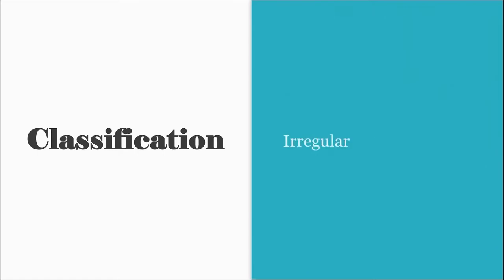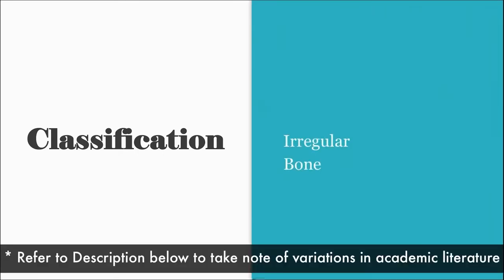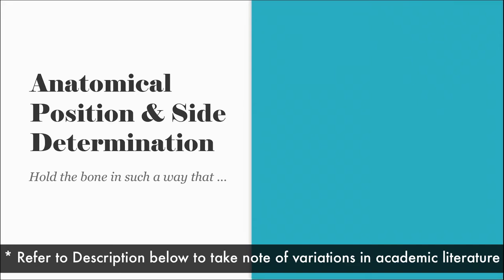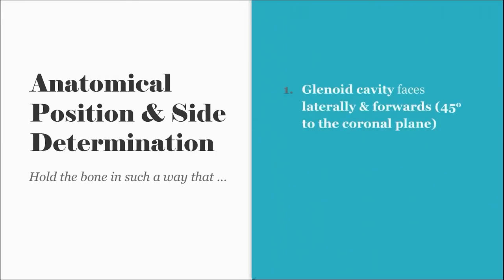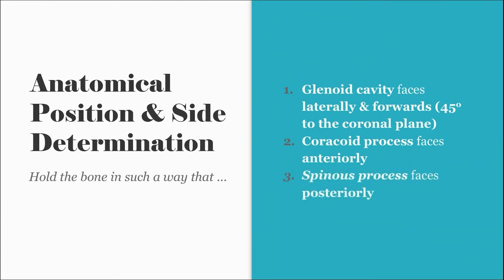The scapula is an irregular bone. For anatomical position and side determination, hold the bone such that the glenoid cavity — the lateral angle — faces laterally and also slightly forwards, about 45 degrees to the coronal plane. The coracoid process faces anteriorly, and the spinous process or spine of the scapula faces posteriorly.